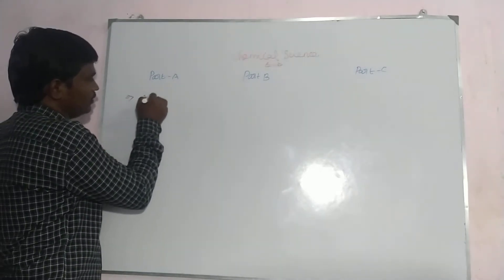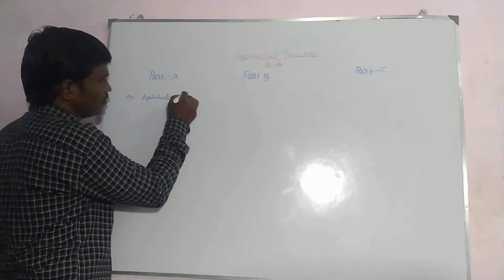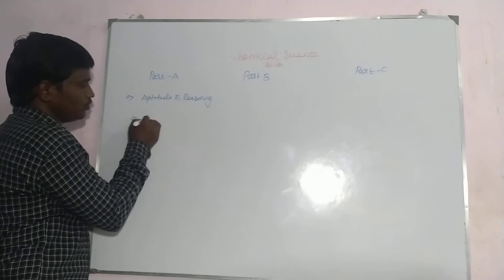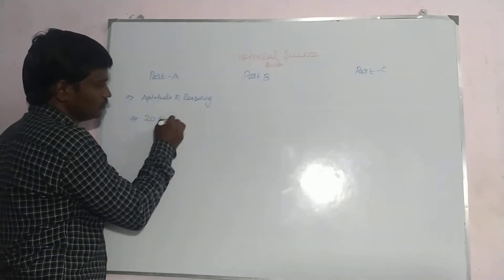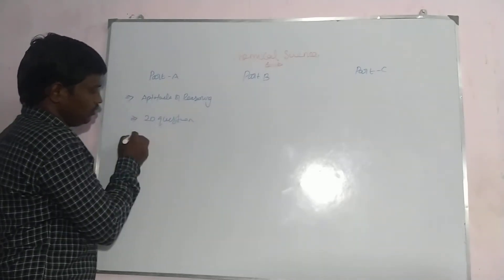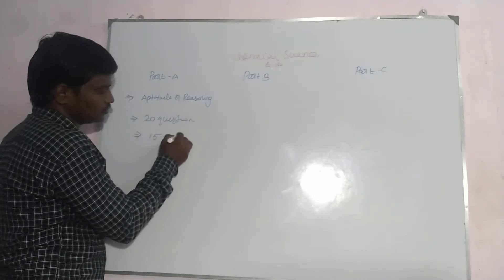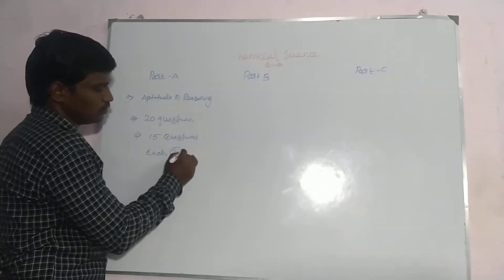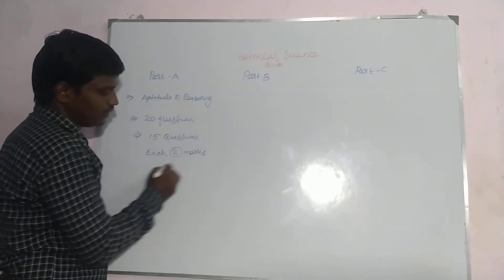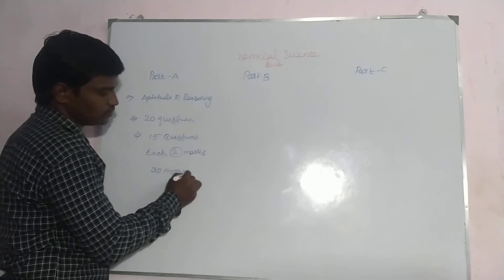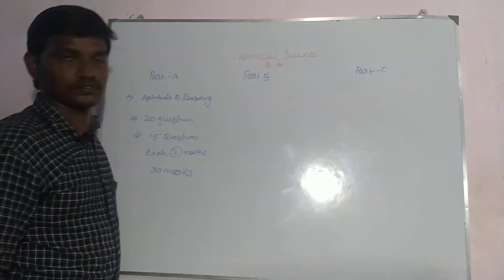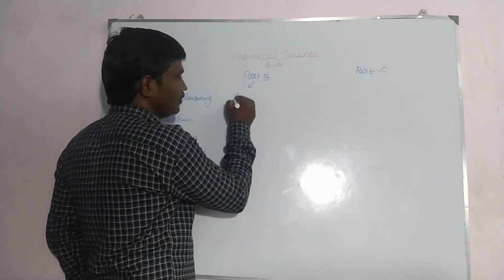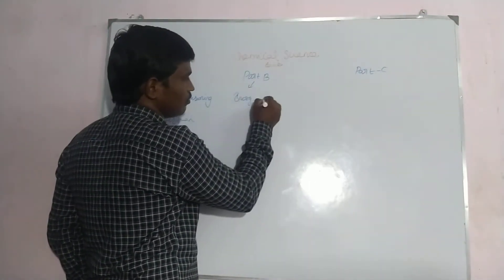Part A is aptitude and reasoning. They will ask 20 questions; you will attend 15 questions. Each question is 2 marks, so you will get 30 marks on your Part A portion. Then Part B — this is your major chemistry: inorganic, organic chemistry.